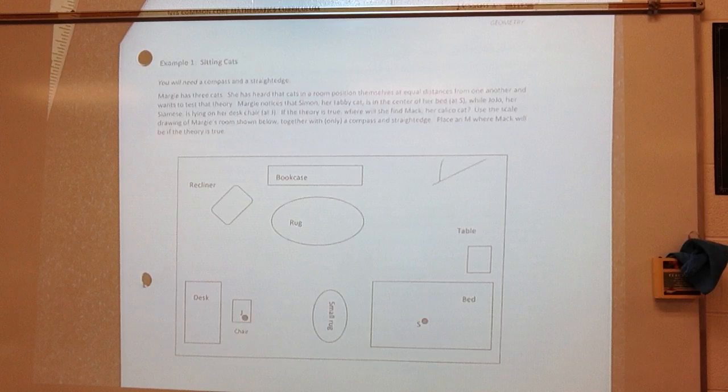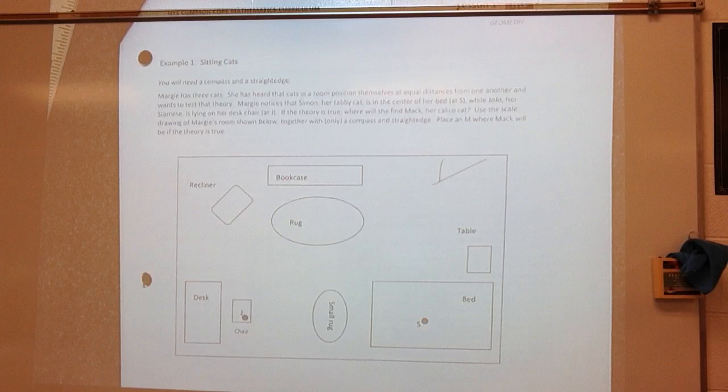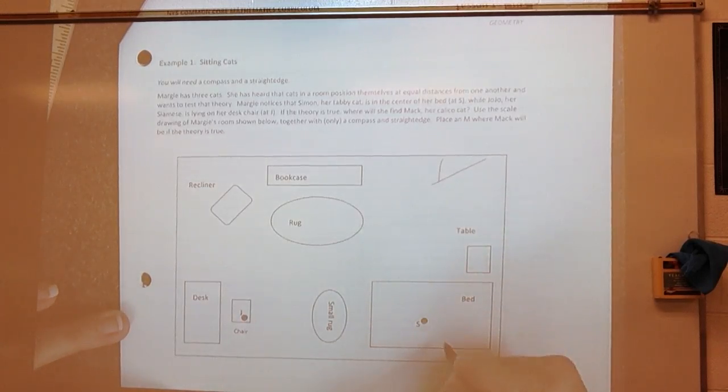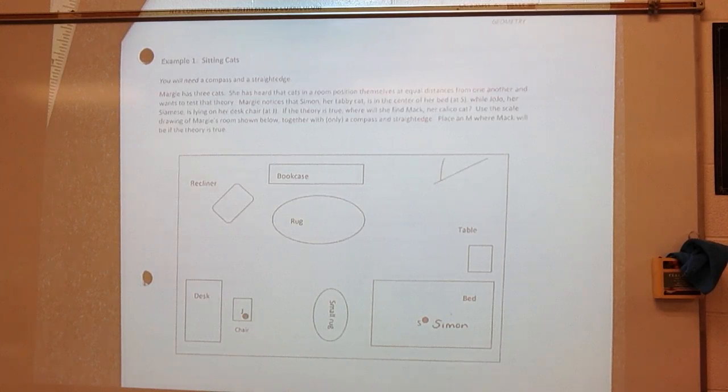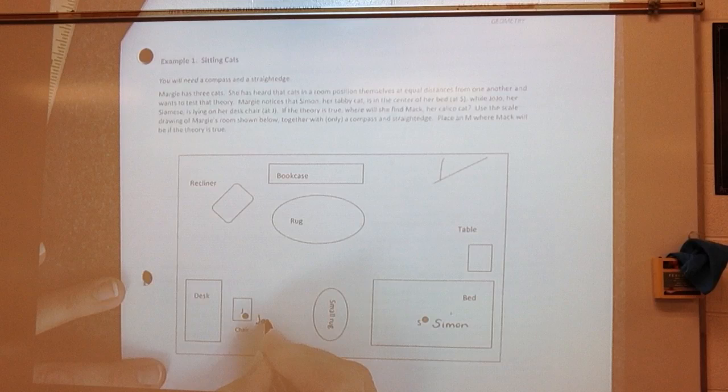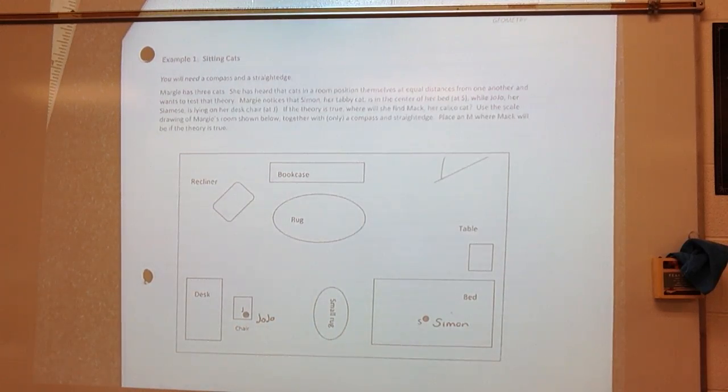All right, so let's see what it says. It says, Margie has three cats. She has heard that cats in a room position themselves at equal distances from one another and wants to test that theory. Margie notices that Simon, her tabby cat, is in the center of her bed at S. All right, so here is, they've already marked it for us. This is Simon. JoJo, her Siamese, is lying on her desk chair at J. So here is JoJo. If the theory is true, where will she find Mac, her calico cat? Use the scale drawing of Margie's room, shown below, together with only a compass and a straight edge. Place an M where Mac will be if the theory is true.